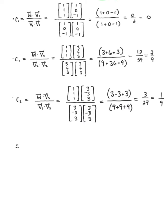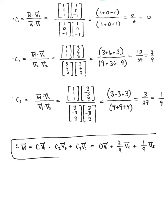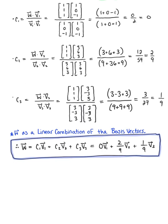We now have everything we need and can write vector w as a linear combination of the basis vectors: c sub 1 times v sub 1 plus c sub 2 times v sub 2 plus c sub 3 times v sub 3, which equals 0 times v sub 1 plus 2 ninths times v sub 2 plus 1 ninth times v sub 3. The coordinate vector of w with respect to the basis has components equal to the unique scalars c sub 1, c sub 2, c sub 3, giving us the vector with components 0, 2 ninths, 1 ninth.